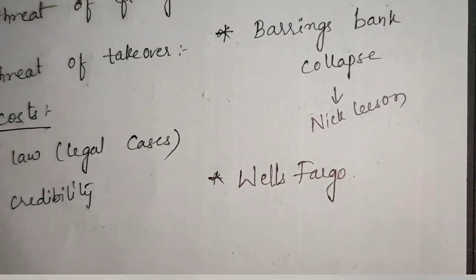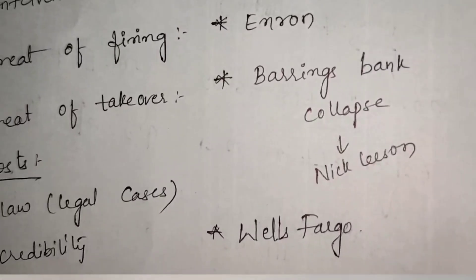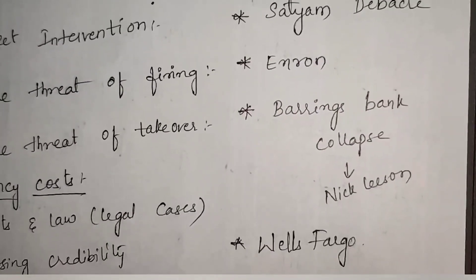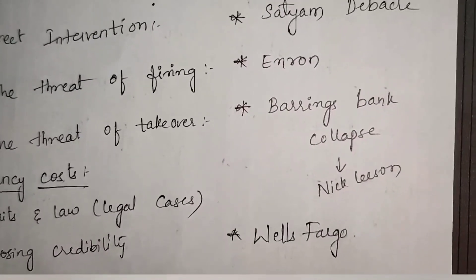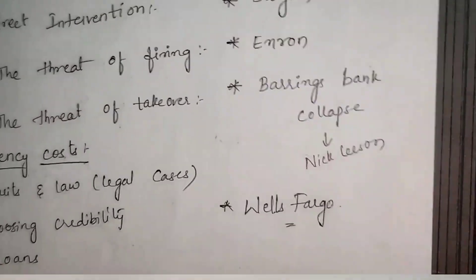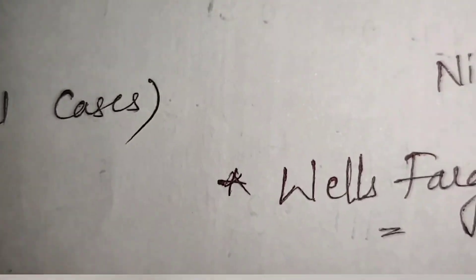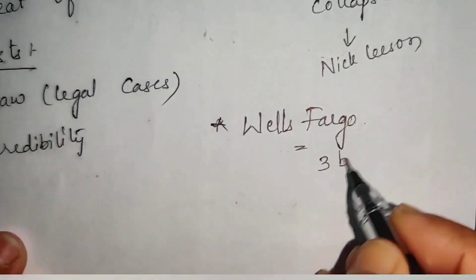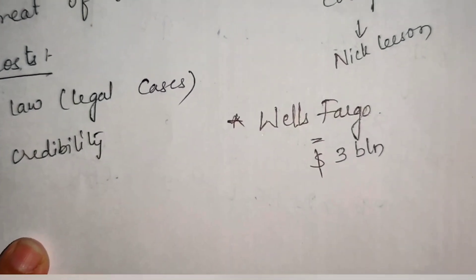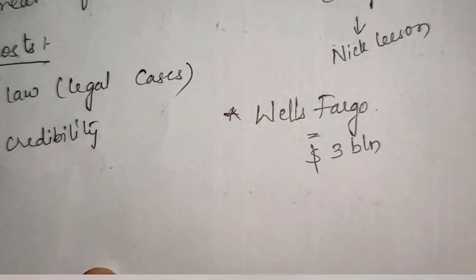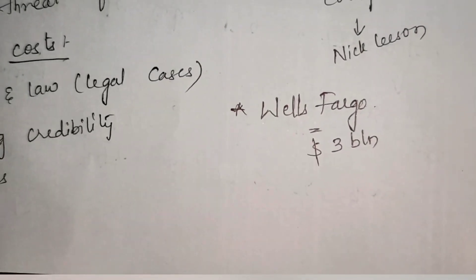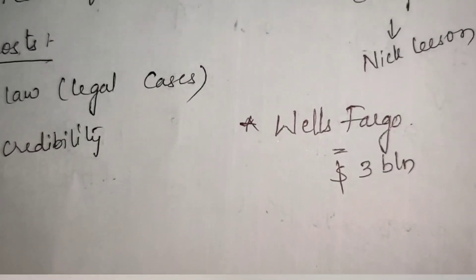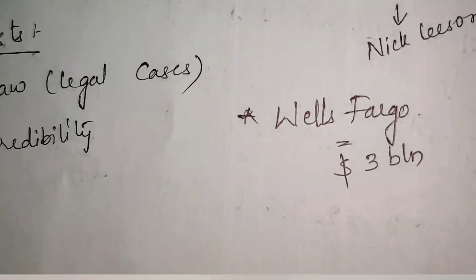All these examples are multinational companies worth billions of dollars, but just because of this agency problem all of them have collapsed. Wells Fargo, the fourth major bank in the US, lost around 3 billion dollars in worth. It has 1.9 trillion dollars of assets but it lost 3 billion dollars. In the next session we are going to see Wells Fargo's case in detail.